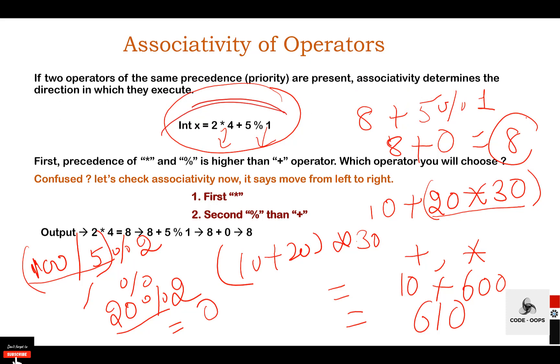If two operators of the same precedence are present, associativity determines the direction in which they execute — either from left to right or from right to left.